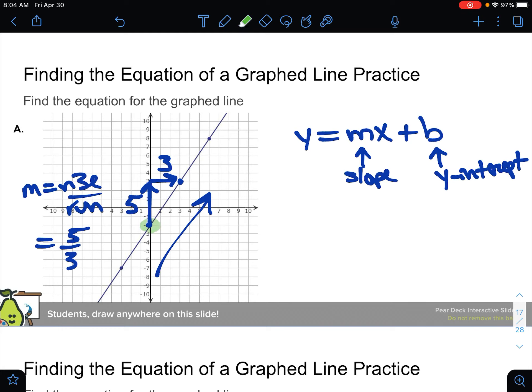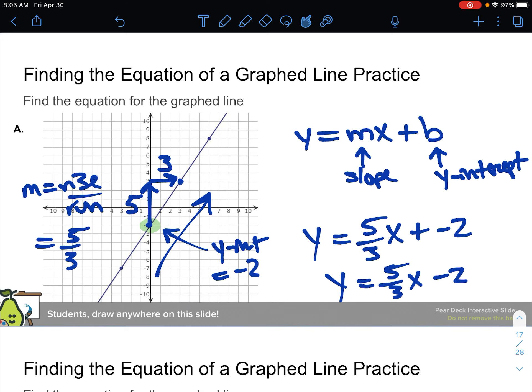The y-intercept happens where it crosses the y-axis, which is right here at negative two. So that's the y-intercept at negative two. So our equation is just y equals the slope, as a fraction is totally fine, plus the y-intercept. We don't need to do a plus minus two. We can just do a minus two. So five-thirds x minus two.